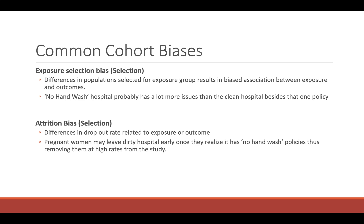Now we'll look at some common cohort biases. The first is exposure selection bias: if there are differences in the population selected for the exposure group, it results in a biased association between exposure and outcomes. For instance, the no-hand-wash hospital probably has more issues than the clean hospital besides just that one policy. There is also the risk of attrition bias — differences in dropout rate related to the exposure or outcome. For example, pregnant women may leave the dirty hospital early once they realize it has a no-hand-wash policy, thus removing them from the study at high rates.